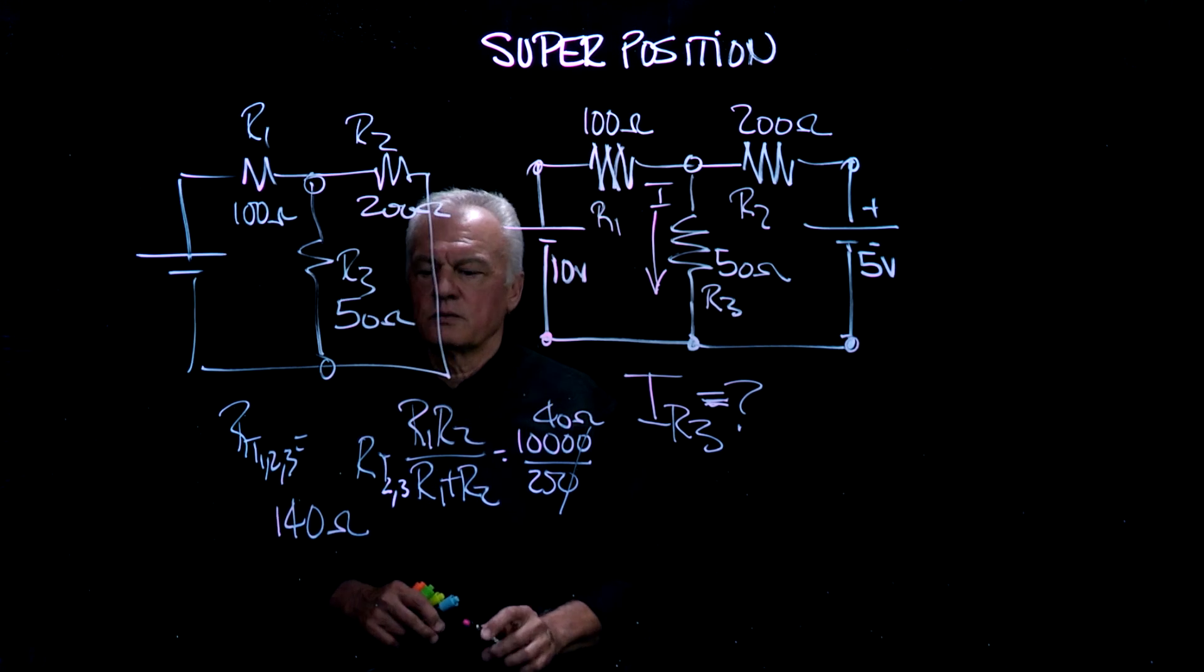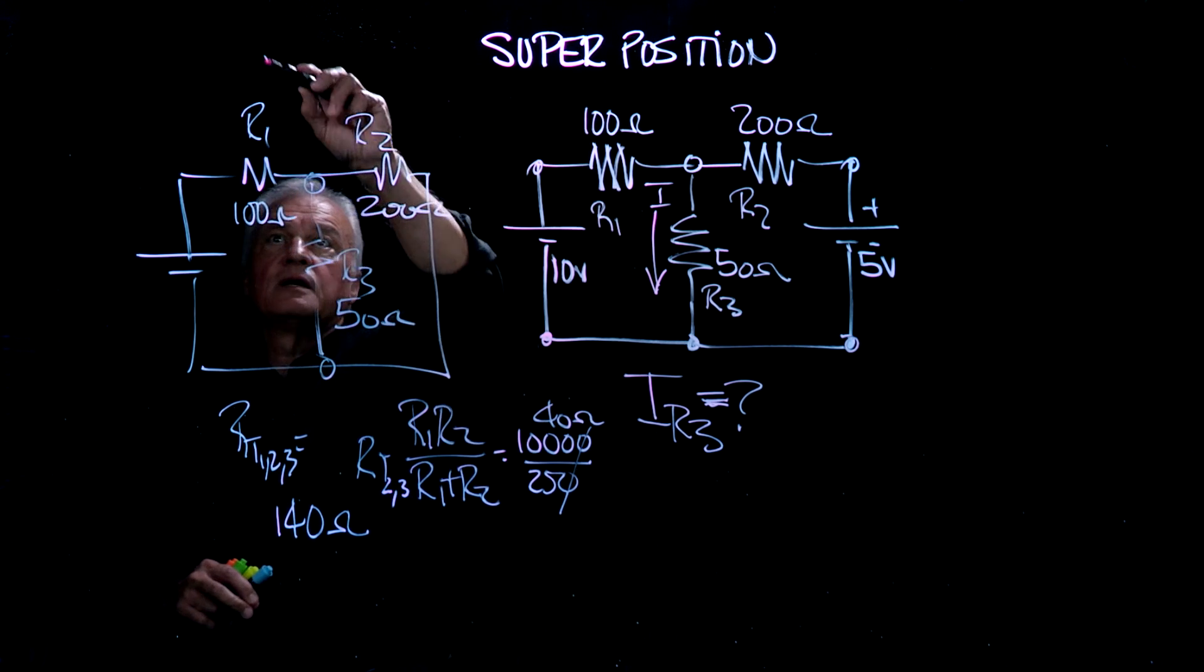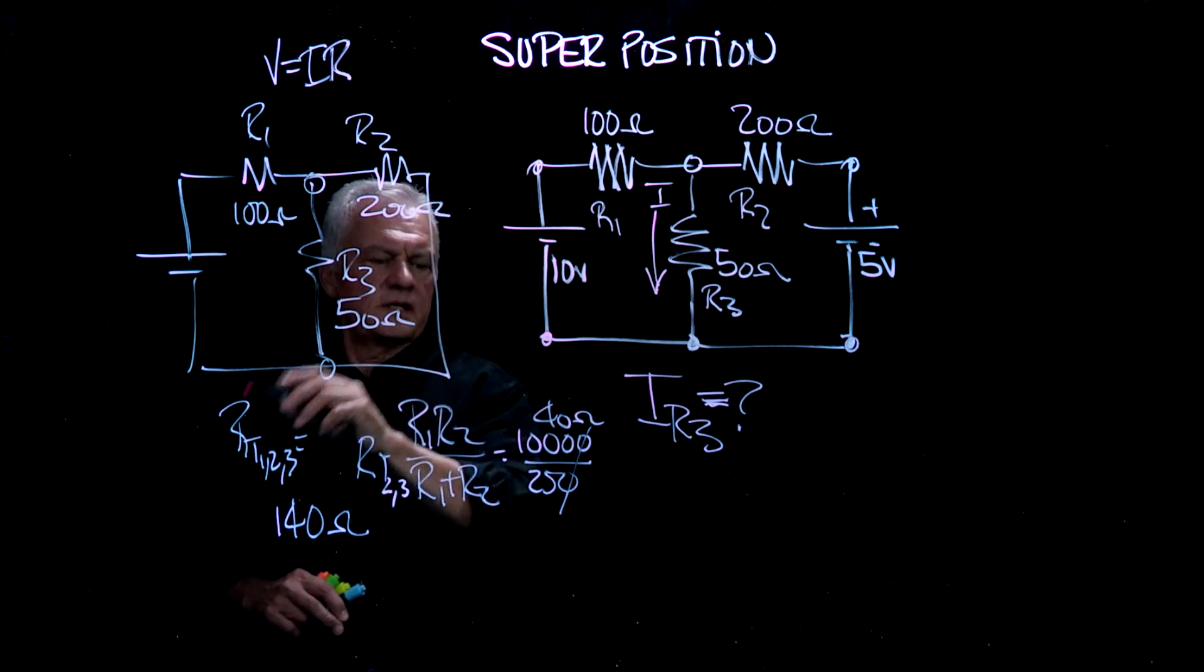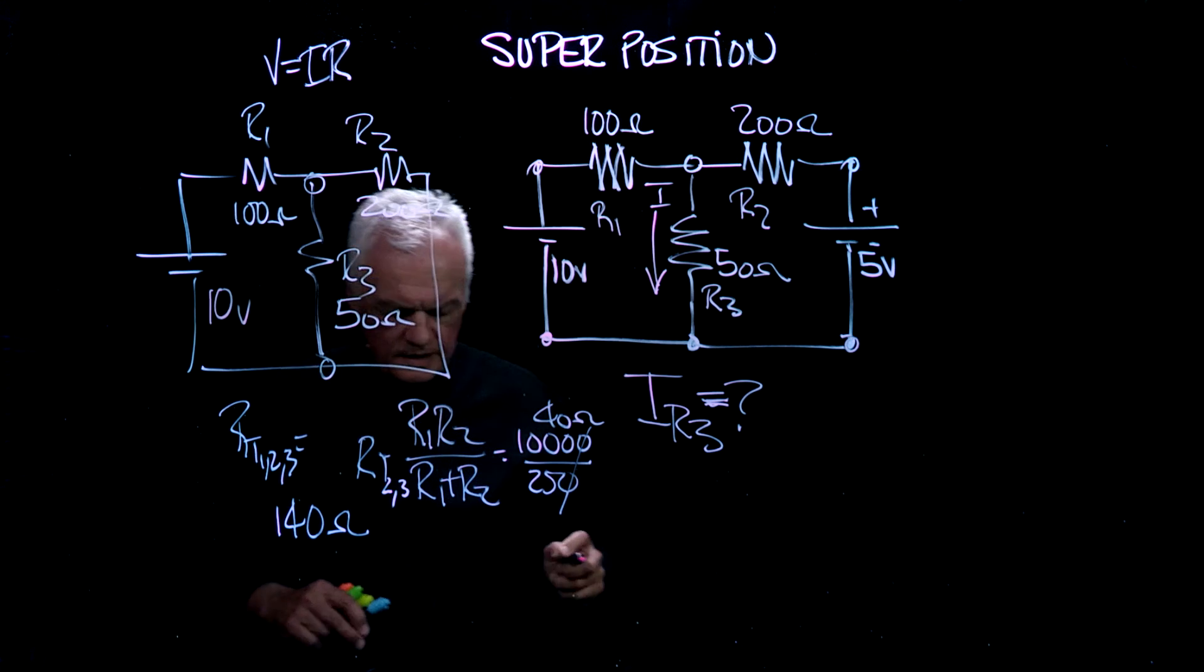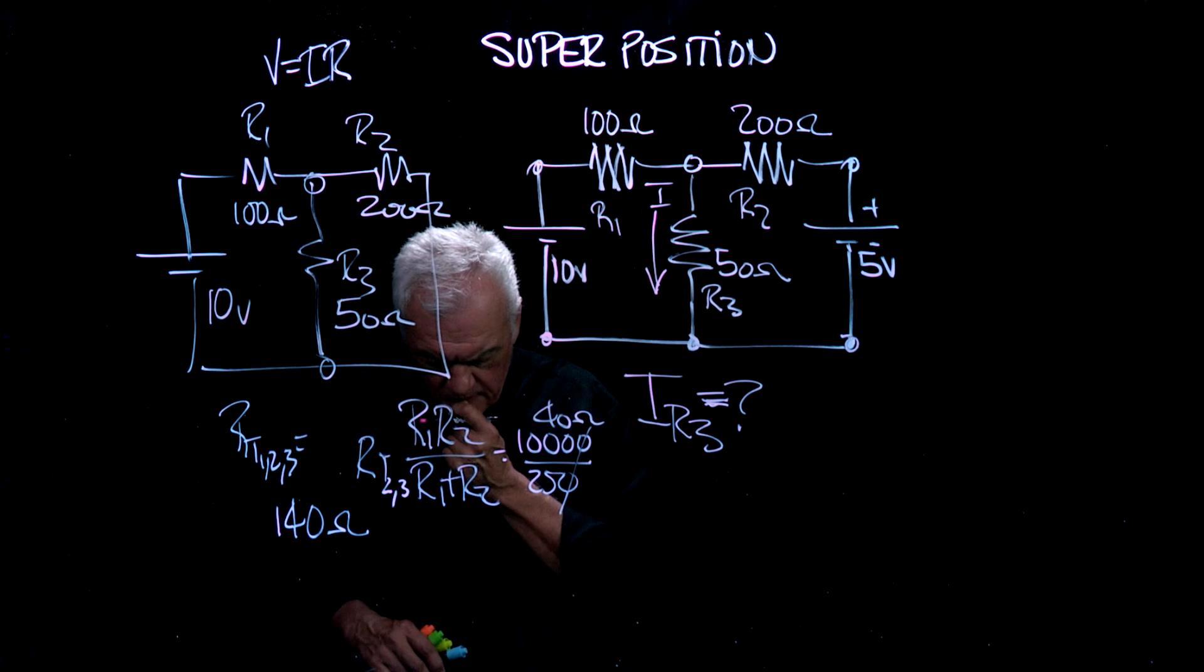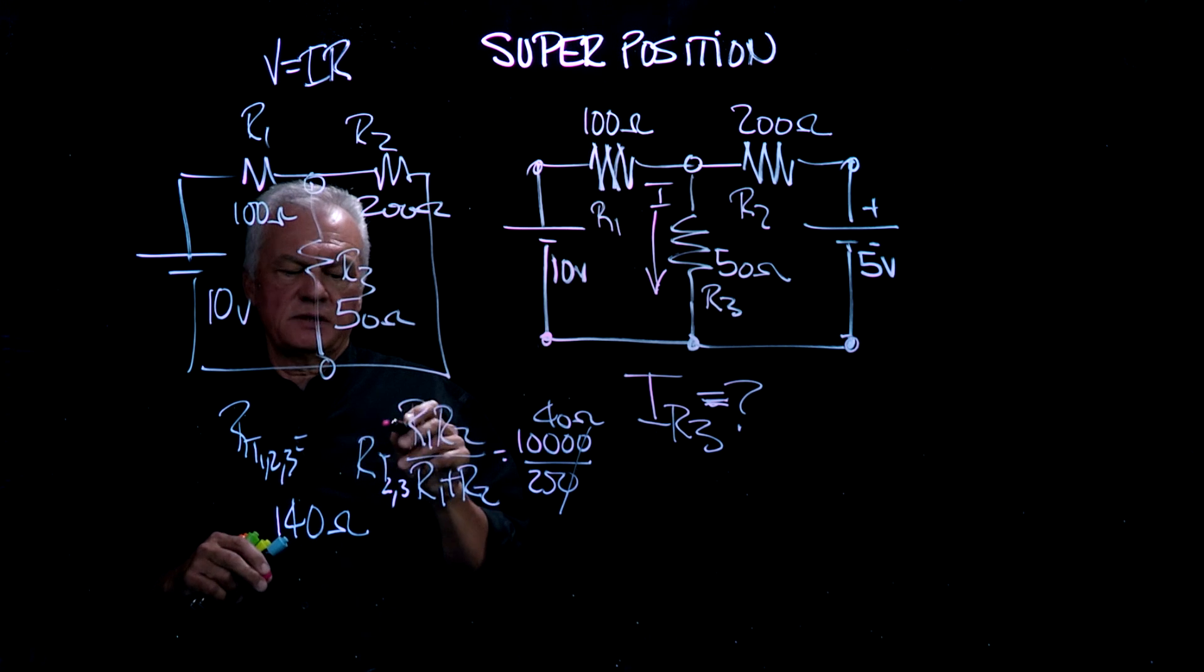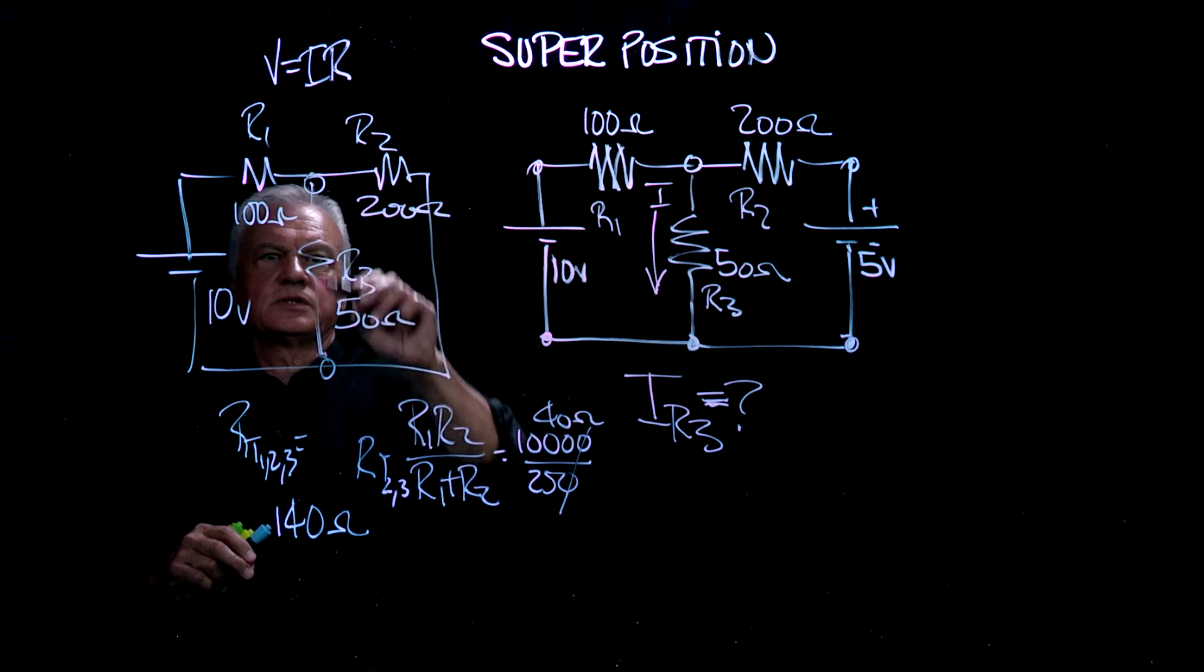If that is my total resistance, and Ohm's law said that voltage equals current times resistance, and I've got 10 volts in this case here, so then I have 10 volts over 140 ohms. Actually, what I'm going to do is something different. I'm going to say, what is the voltage across here? If that is the case, I'm going to use the resistor divider rule that we just had.